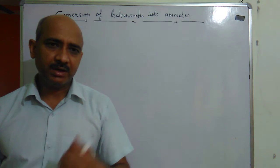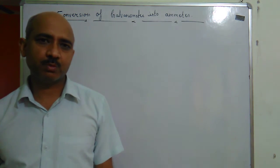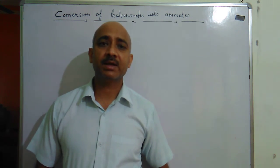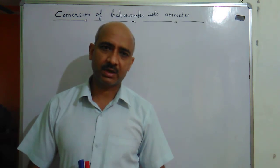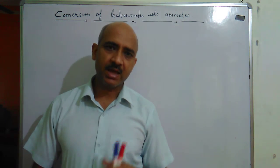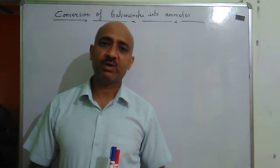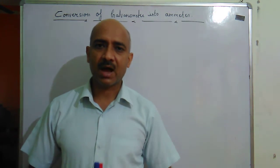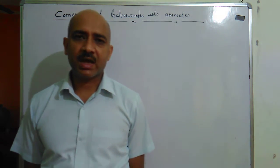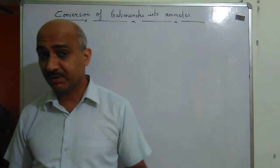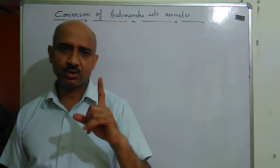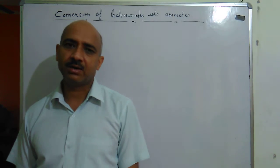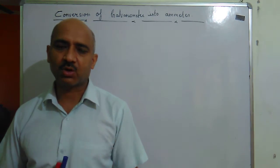First of all, let me tell you what an ammeter is. An ammeter is an instrument you have seen in the laboratory during practical sessions. It measures current strength. Now, a key question is how to convert a galvanometer into an ammeter, and what are the similarities between the two. There is a center zero mark on the scale, meaning the galvanometer can measure current value and also tell you the direction of current.